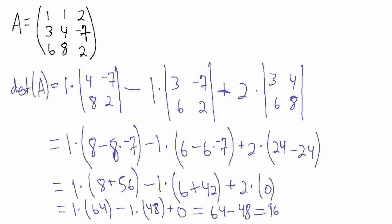So the determinant of this 3x3 matrix we just found is 16. Now what did we do at the beginning? We took this 1 — since it's in the first row, first column, we ignore the first row, first column, and then looked at the matrix formed by these leftover values: 4, negative 7, 8, and 2. And then we did minus 1 times — so this 1 here is in the first row and second column, so if we ignore the first row, ignore the second column, what's left is 3, negative 7, 6, and 2. And then following that pattern, we did plus 2 times what's left over if we ignore the first row and third column: 3, 4, 6, and 8, the determinant of that matrix. We took everything in the first row — we didn't have to do that.